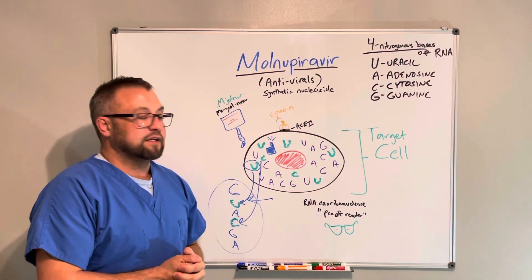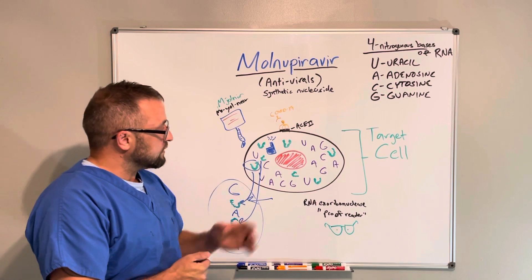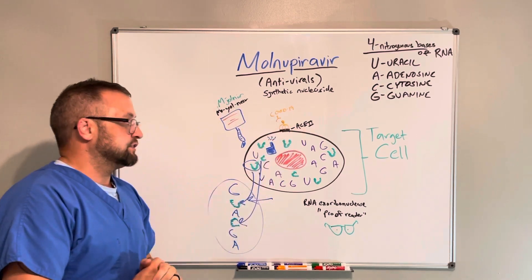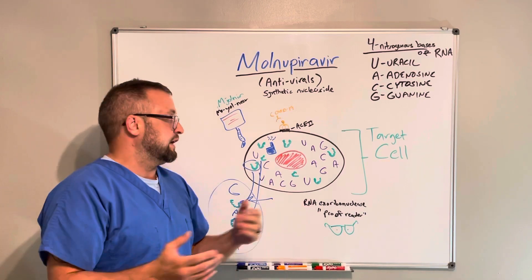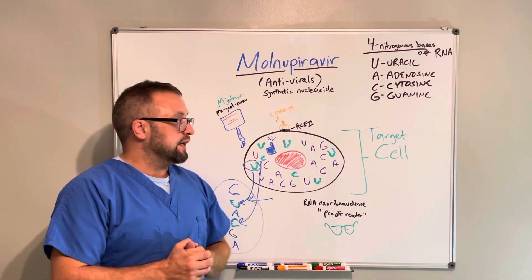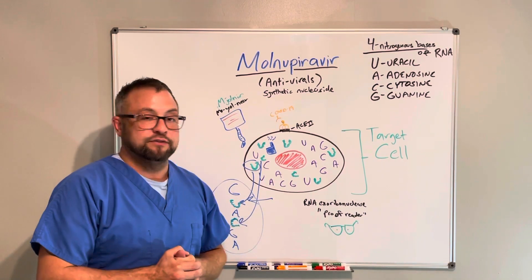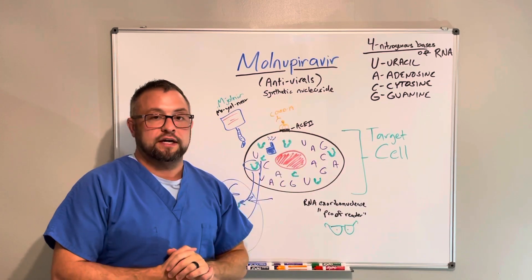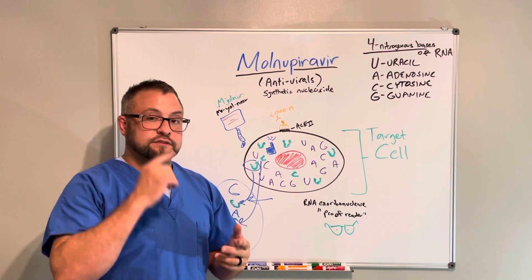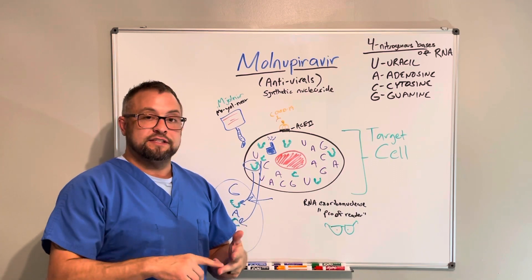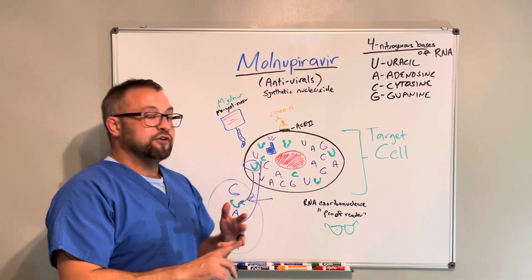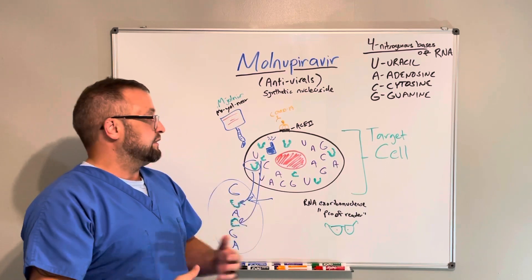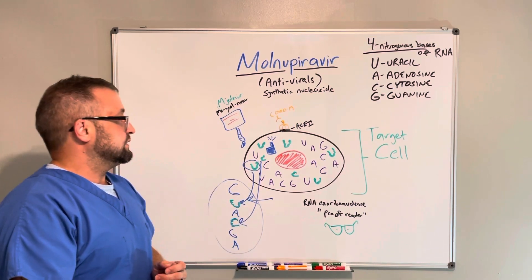To understand that, we first have to understand a little bit of what viruses do. Here I've drawn the COVID-19 virus. It's docked to this ACE2 site, which is where it likes to interact. Not all cells have ACE2 sites — just the target cells, which are neuroepithelial cells, causing loss of smell and taste; intestinal cells, causing diarrhea; and some pneumocyte cells, which is why you get pulmonary complications.